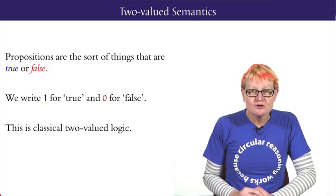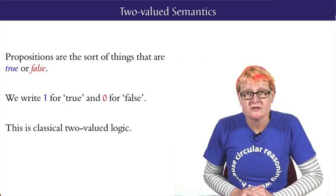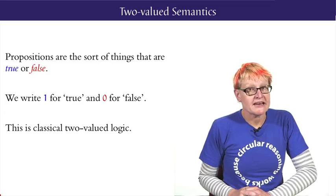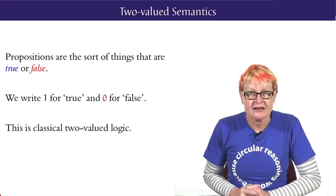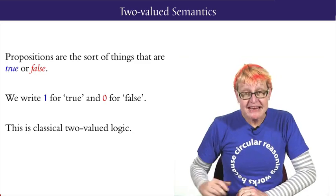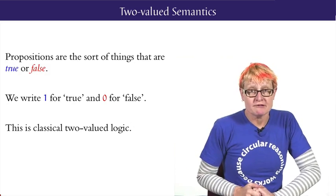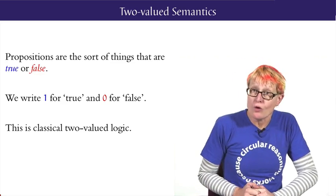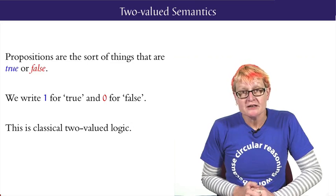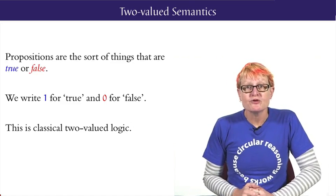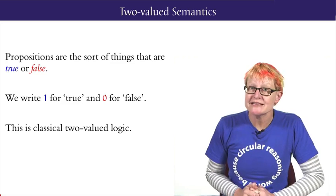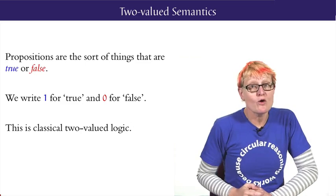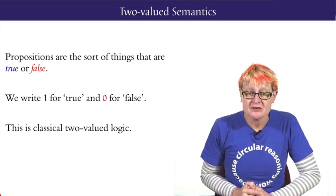This gives us classical two-valued logic. In more advanced courses in logic, one may study so-called non-classical logics with more complex semantics which allow more than two possible truth values. For example, in a three-valued logic, one has the values 0, 1 and a half where a half usually means not sure. While in fuzzy logic or probability logic, the possible truth values include all the real numbers between 0 and 1, all the decimal numbers, infinitely many of them. In the philosophy section of this course, we'll briefly discuss some of these non-classical logics.